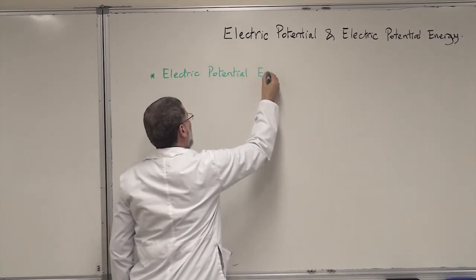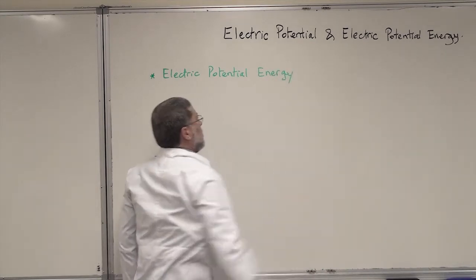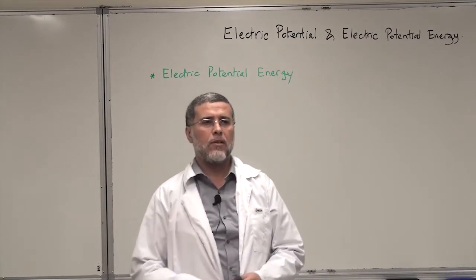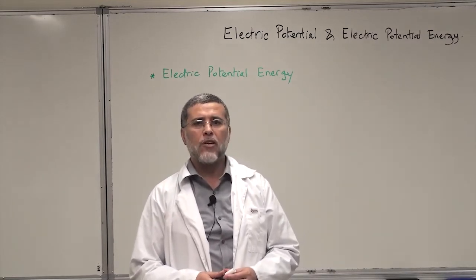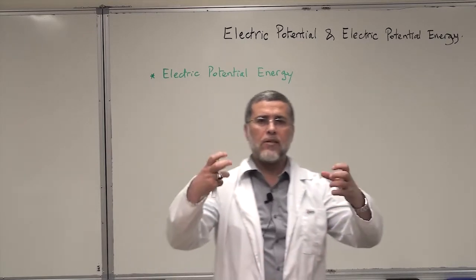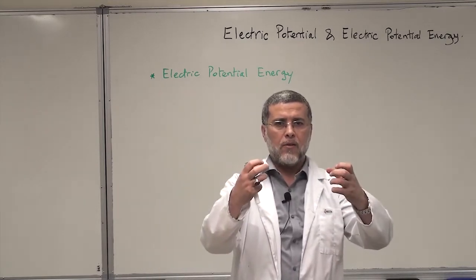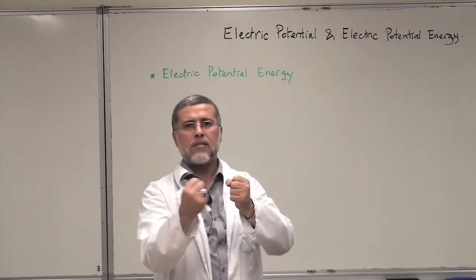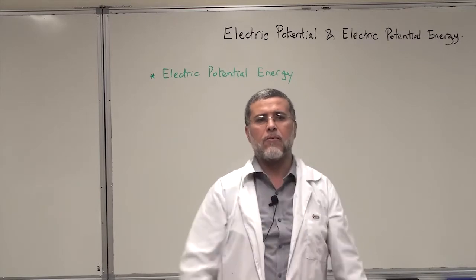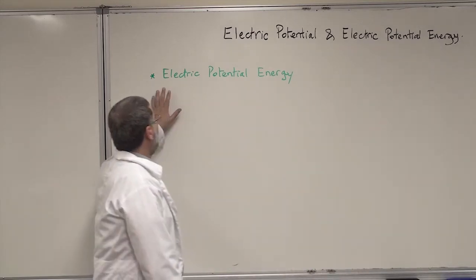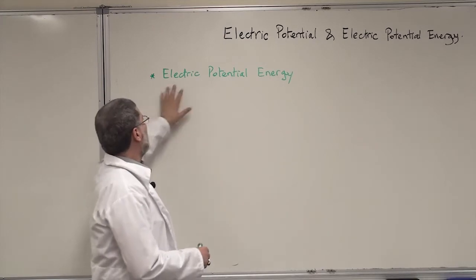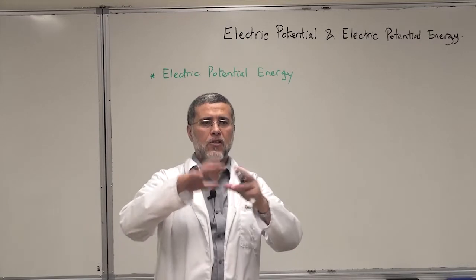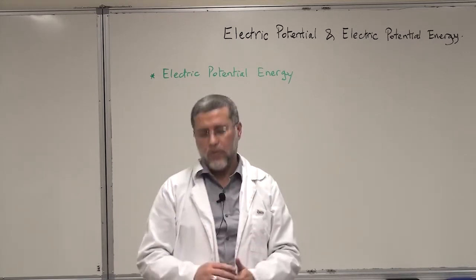As you remember in mechanics, in Physics 101, there was gravitational potential energy related to two masses which are close in a configuration, separated by distance r, and they have a potential energy of that system. Similarly here, in electricity, we have electrical potential energy — the potential energy for a certain charge configuration.